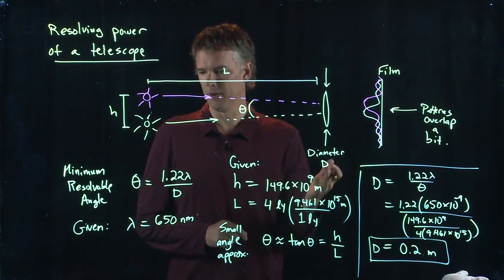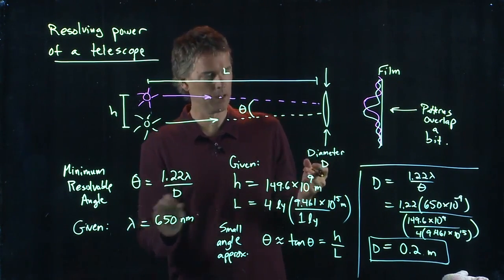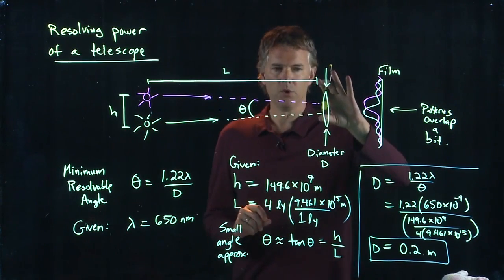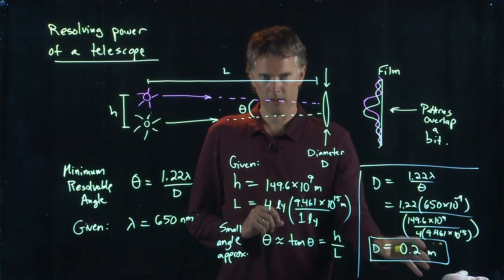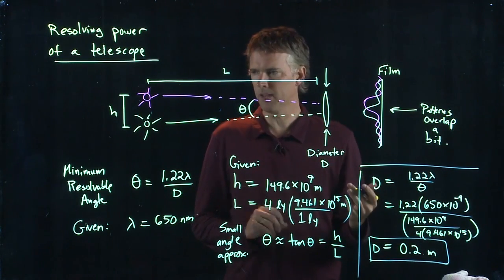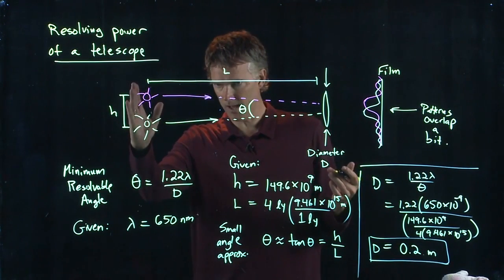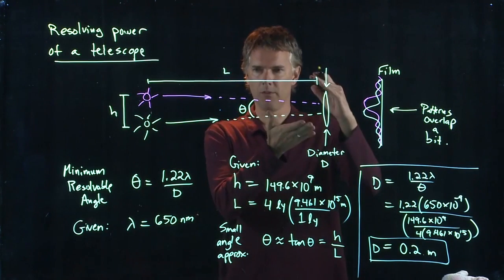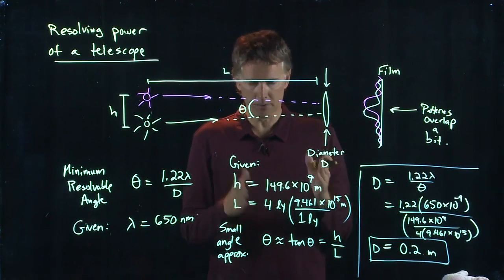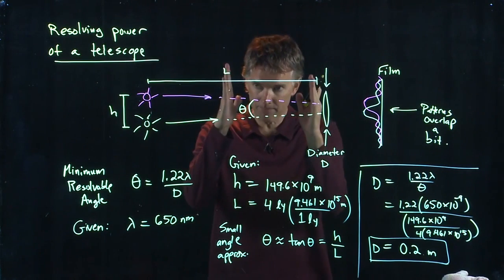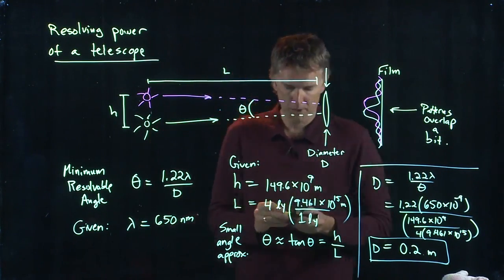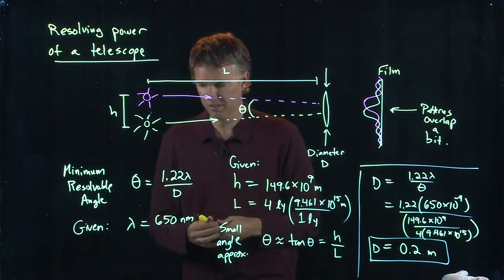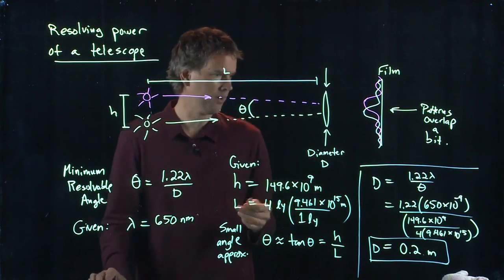You'll have some different numbers, particularly on your wavelength. Everything else should be the same. So you should get a diameter that is roughly on that order. Which is pretty remarkable when you think about it. These things are four light years away, and somehow we can resolve them with a diameter telescope that's 20 centimeters. That's not that big. So it's pretty impressive what you can see with a normal size telescope.